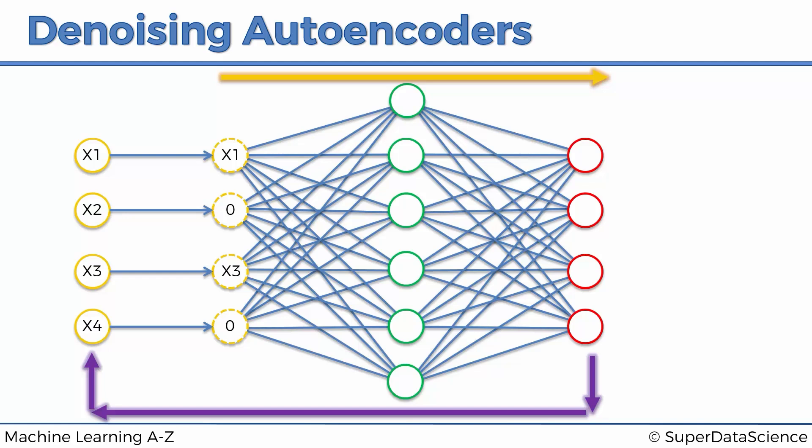And that prevents the autoencoder from simply just copying that data or those inputs all the way through to the outputs, because it's actually comparing the output not with the noisy but with the original inputs. And that helps combat the problem that we are facing.